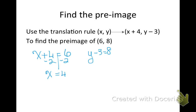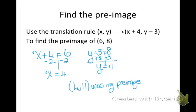And same with y. Hey, if I applied this rule, I would have gotten 8. So what is my y before the rule? It was 11. So 4, 11 was my pre-image point. All right, I think you're ready for your homework.